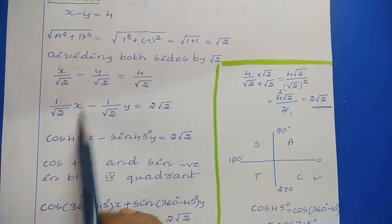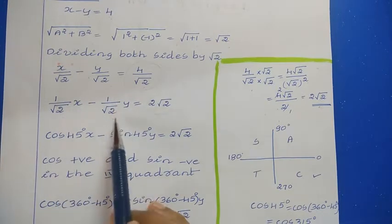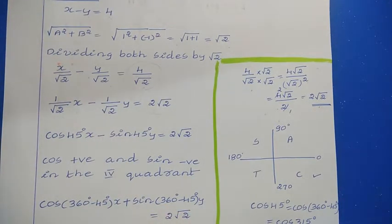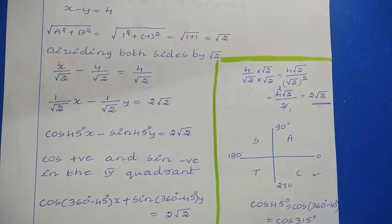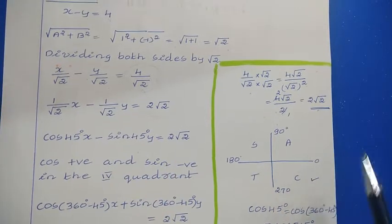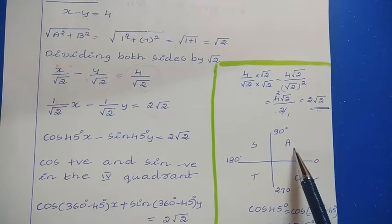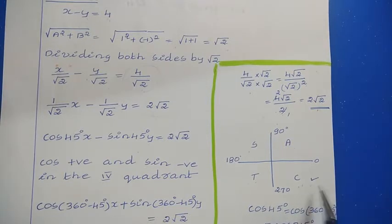Comparing with the normal form, cos ω equals 1 over root 2 and sin ω equals minus 1 over root 2. For 45° we get 1 over root 2 for both cos and sin, but here sin is negative so we cannot use 45° directly. Apply the quadrant rule: cos is positive and sin is negative — this corresponds to the fourth quadrant. So we use 360° minus 45°, because using 270° plus 45° would cause a conversion between cos and sin, which we don't want.